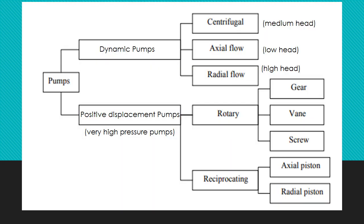Pumps can be divided into two categories: dynamic pumps and positive displacement pumps. Positive displacement pumps are generally very high pressure pumps and they can be further divided into rotary and reciprocating pumps. Reciprocating pumps are basically of three types: plunger, diaphragm, and piston pumps. Rotary pumps can be further divided into gear, vane, and screw pumps.